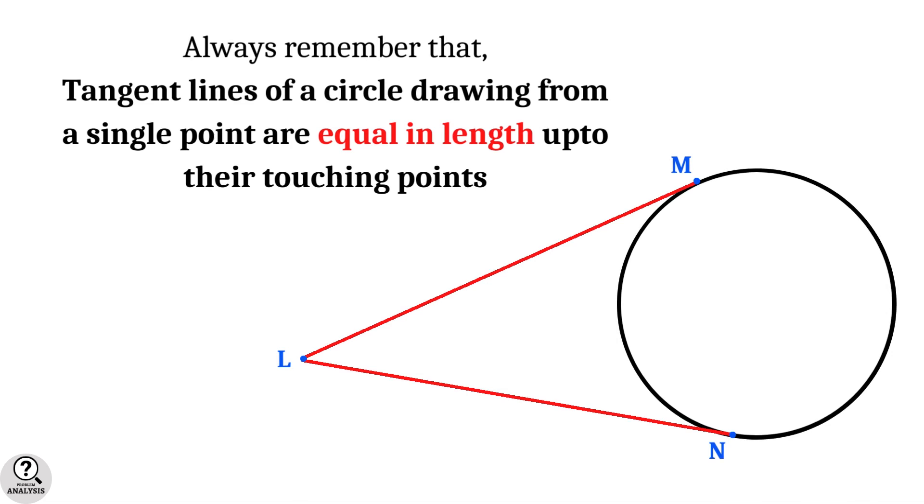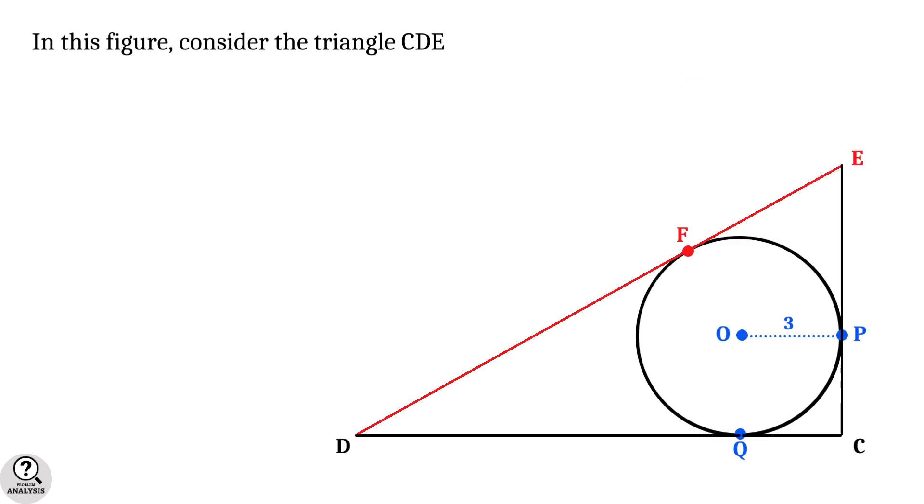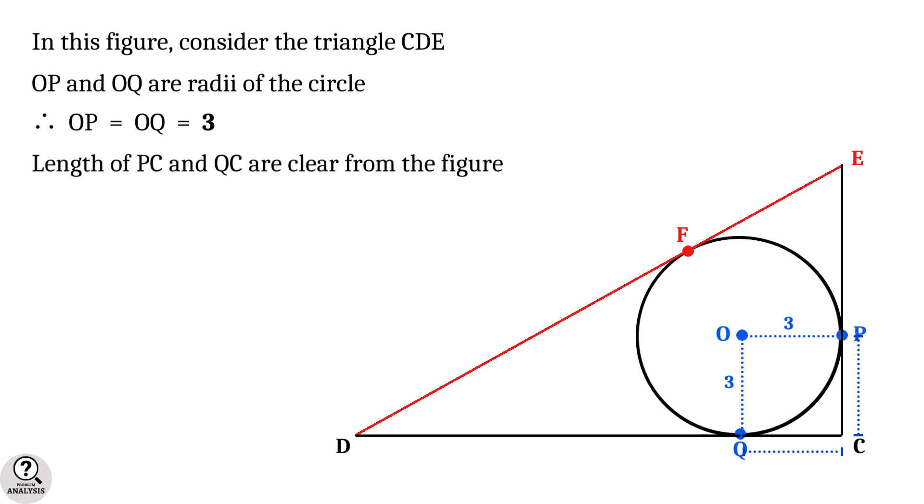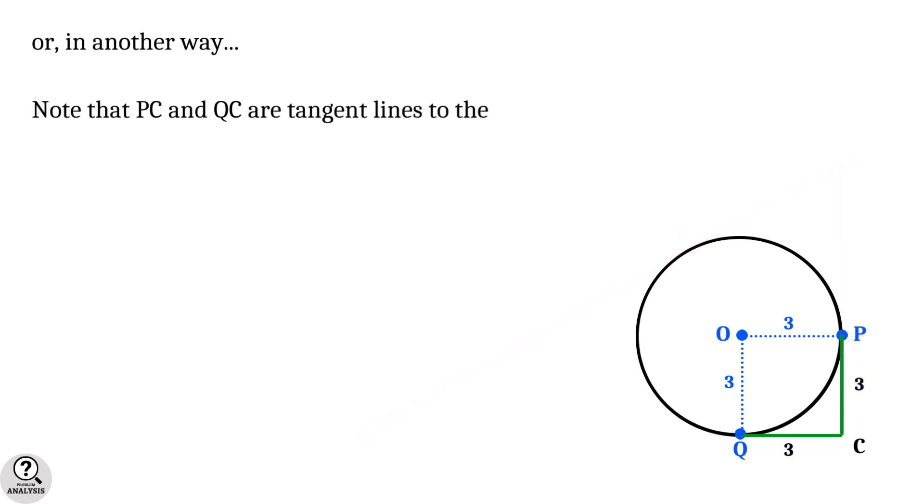Now coming back to the problem, let's consider the right triangle CDE. Clearly the lines OP and OQ are radii of the circle which implies they are equal to three units. So it is clear from the figure that PC and QC are also equal to three units. Or in another way we can see that these lines are two tangents drawn from a single point, therefore by the property of tangents they should be equal.